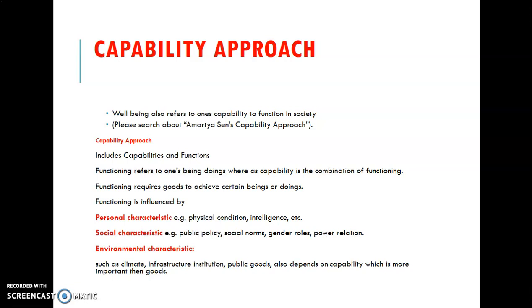To summarize Amartya Sen's capability approach: doing something is functioning, and capability is the combination of functioning. When you have opportunities for a job or earning, you perform services using your personal skills. Social characteristics are provided by the government within your society, and environmental characteristics are addressed through certain government policies.